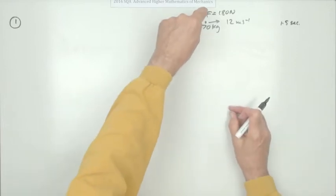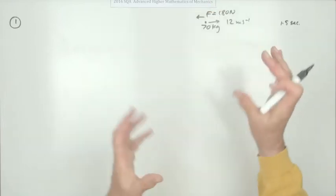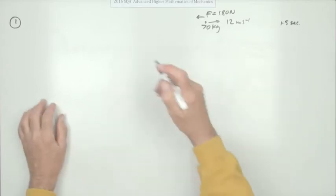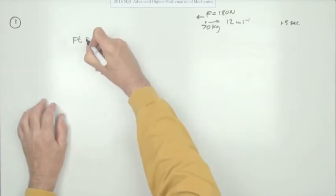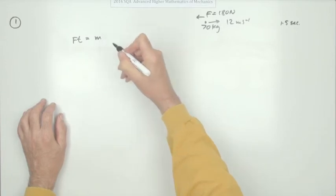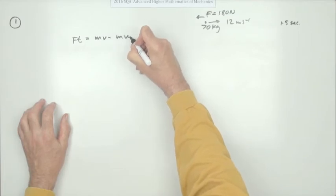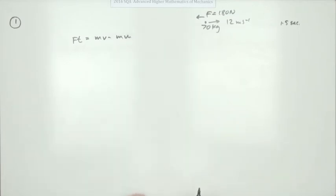Well straight away that suggests force acting for a certain time - impulse. The impulse equals the change in momentum. So you could write ft equals m either v2 and v1 or we could just say mv minus mu using u for the initial velocity and v for the final velocity.